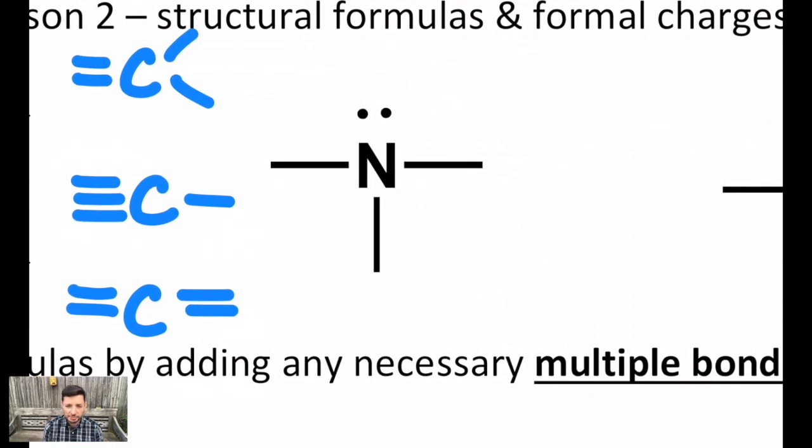Nitrogen, another common element in organic species, will have three bonds and one lone pair. Again, this is when you don't have a formal charge. We'll get there in just a moment. Three single bonds is one way to do it. Alternatively, you could have one double bond and one single bond, or you could have just one triple bond. All of those have one lone pair, unshared pair of electrons on the nitrogen atom.